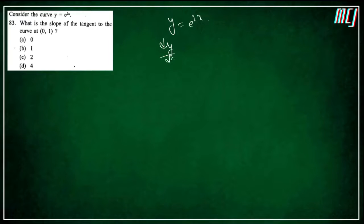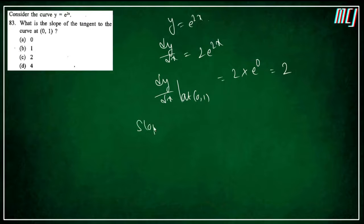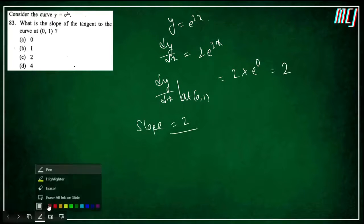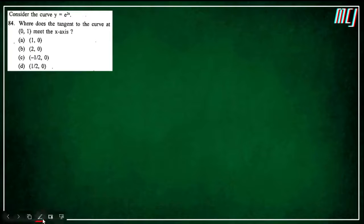Next question: slope of tangent to curve at (0,1). Slope means dy/dx. From the previous solution y = (1/2)(1 − e^(−2x)), dy/dx = 2·e^(−2x)·(1/2)... actually dy/dx = e^(−2x)·... at x=0: dy/dx = 2·e^0 = 2. So slope = 2, option C is the correct answer.